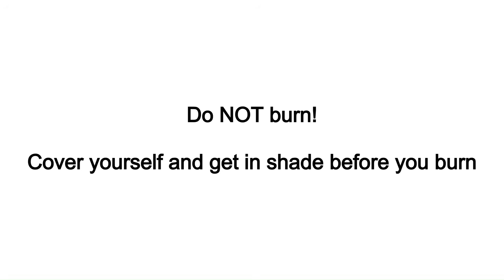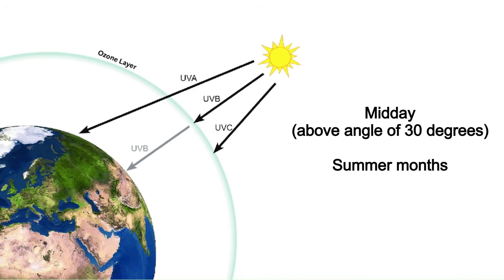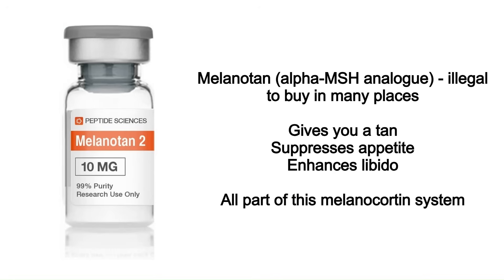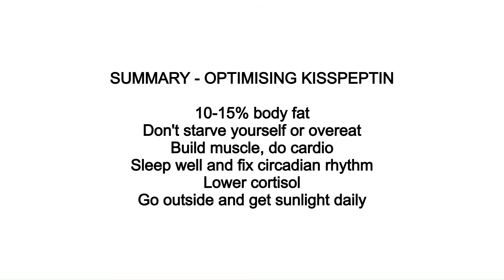You should get direct sunlight on your skin and in your eyes to optimize alpha-MSH production, kisspeptin, and everything downstream — no sunscreen and no sunglasses, though obviously don't burn yourself. UVB light only penetrates the atmosphere at midday when the sun is above 30 degrees in the sky, so this mainly happens during midday in the summer months. Some people take melanotan, an analog of alpha-MSH, which darkens skin, suppresses appetite, and enhances libido — showing the fascinating overlap within the melanocortin system.